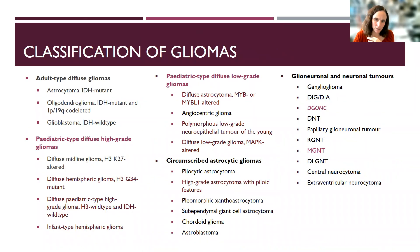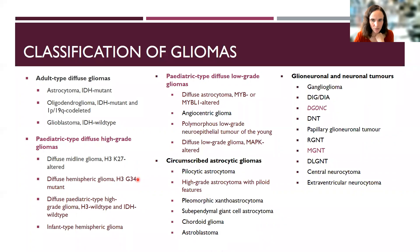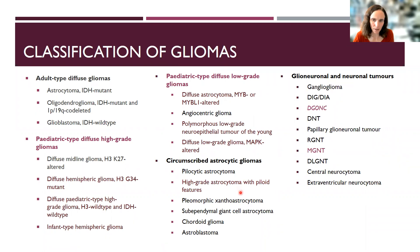This is the classification for gliomas in the 2021 WHO. New entities are highlighted, including the overall split of adult type versus pediatric type. There are pediatric-type high-grades, pediatric-type diffuse low-grade gliomas, and more familiar entities in circumscribed astrocytic gliomas. In glioneuronal and neuronal tumors, many familiar entities appear along with new additions. Some of these have molecular features that accompany the morphology.